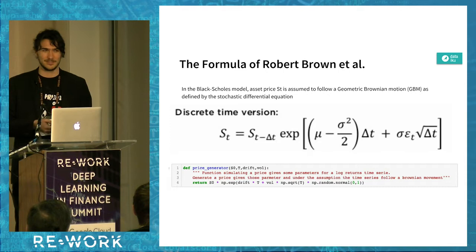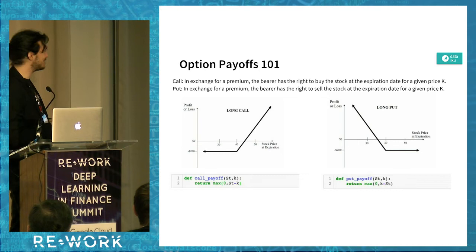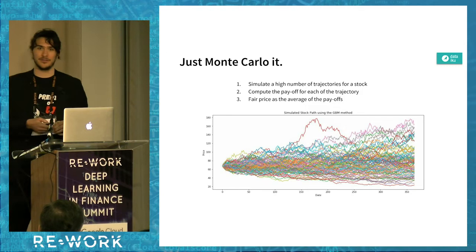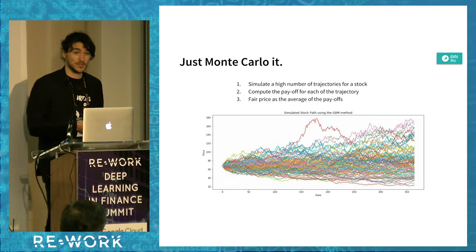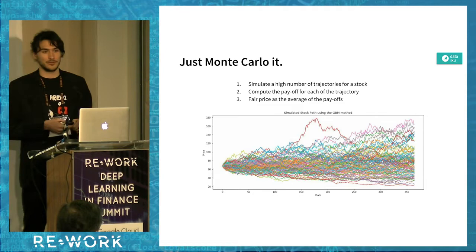Python is perhaps easier to read than a formula. The payoff is quite simple — there is a max function that looks like a rectifier unit from a neural network, but it's not. Once you take the assumption that the log return of a stock follows a Brownian motion, a simple way to price it is Monte Carlo: you simulate a very high number of trajectories, compute the payoff of all those trajectories, and the fair price is the average payoff.